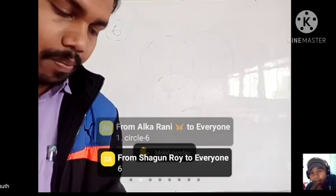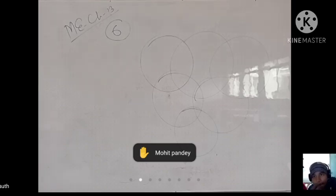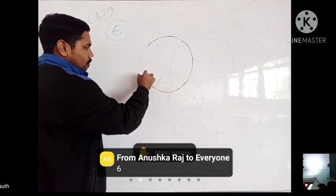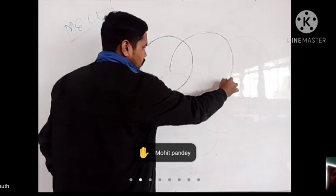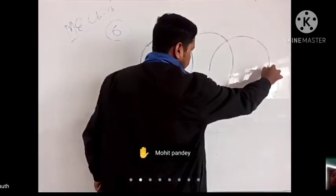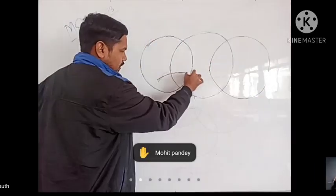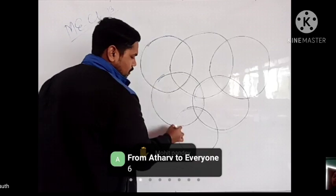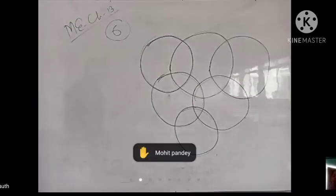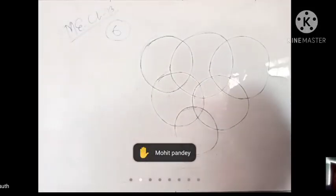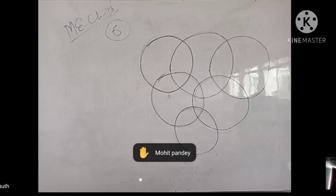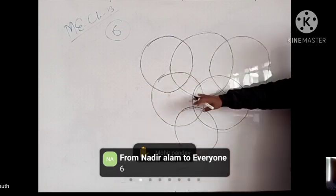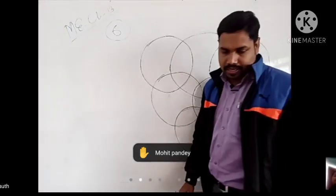So in question 6, question number 1: yeh ek circle hai — one; yahan pe ek circle hai — two; yahan pe ek circle hai — three; yahan pe ek circle hai — four; yahan ek circle — five; and here one circle — six. So total 6 circles. Upar mein teen hai, uske baad do hai, aur last mein ek hai, toh is tarah se total 6 circles hain.